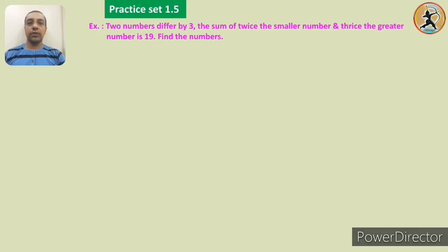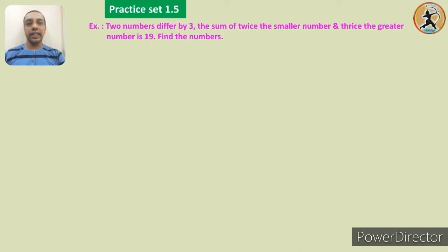The example is given on the screen. Two numbers differ by 3. The sum of twice the smaller number and thrice the greater number is 19. Find the numbers. In this type of example, first of all we have to consider variables for the two different terms given. The two numbers — one is smaller and the other is greater.